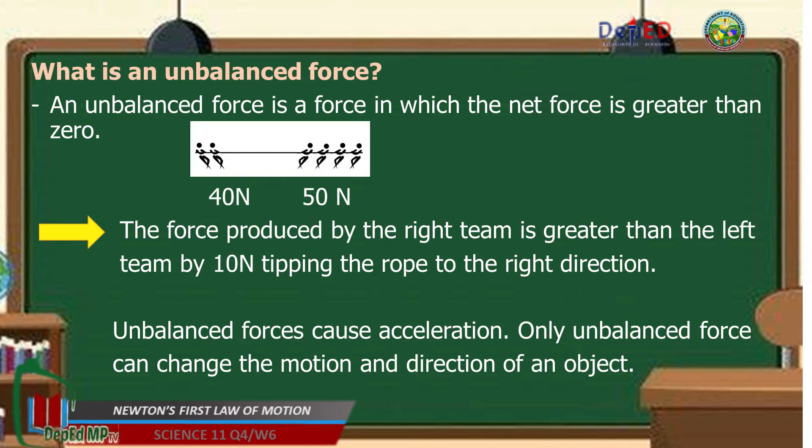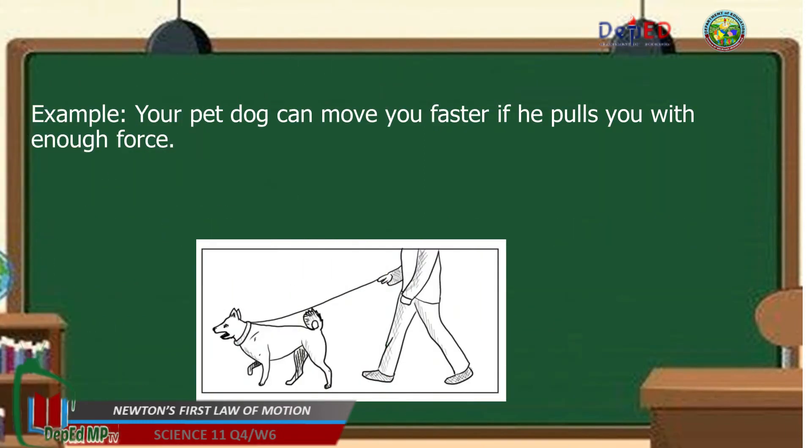What is an unbalanced force? An unbalanced force is a force in which the net force is greater than zero. So let us take a look at the picture. The force produced by the right team is greater than the left team by 10 newton, tipping the rope to the right direction. Unbalanced forces cause acceleration. Only unbalanced forces can change the motion and direction of an object. Example, your pet dog can move you faster if he pulls you with enough force.